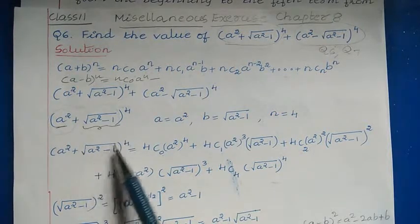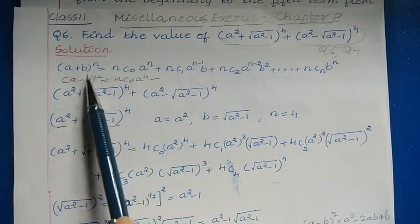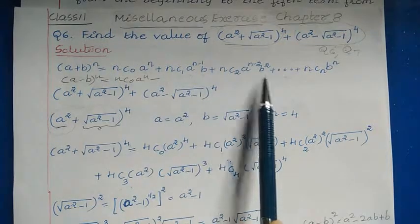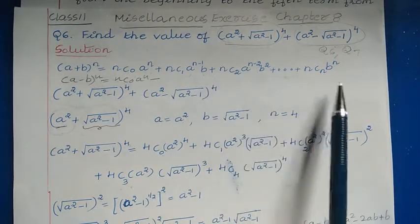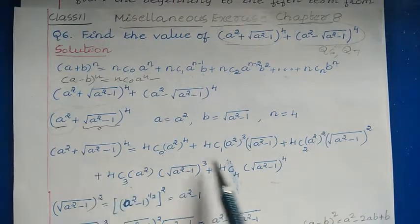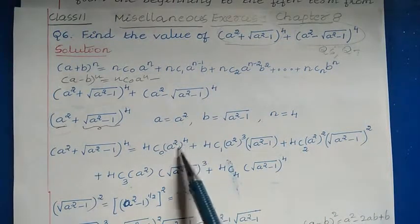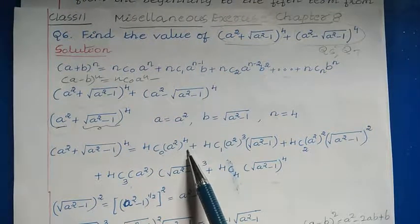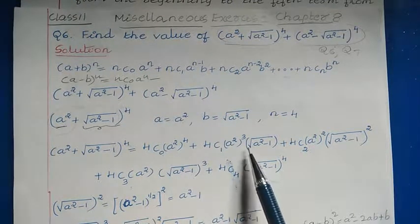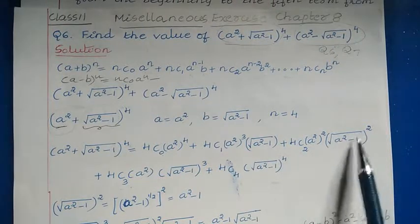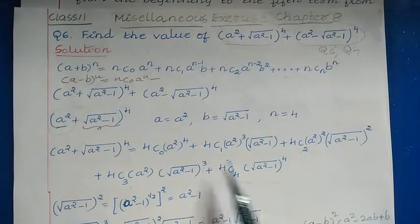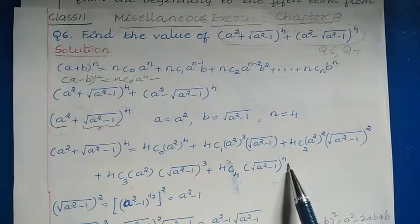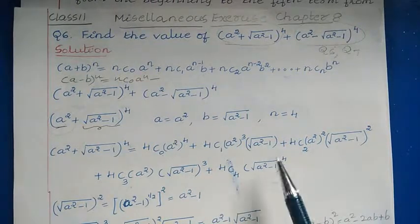The second variable is √(a²−1). Its power increases starting from power 0 (which is 1), then power 1, power 2, power 3, and up to power 4. So we write √(a²−1)⁰, √(a²−1)¹, √(a²−1)², √(a²−1)³, and √(a²−1)⁴. This completes the expansion for the first expression.